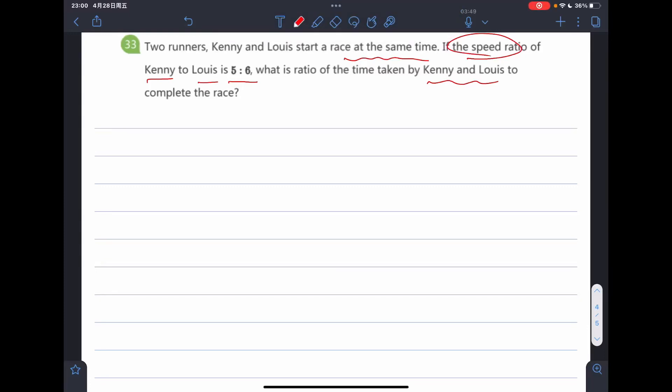All right, let's see number 33. Two runners, Kenny and Luis, start a race at the same time if the speed ratio of Kenny to Luis is 5 to 6. So their speed is different, right?